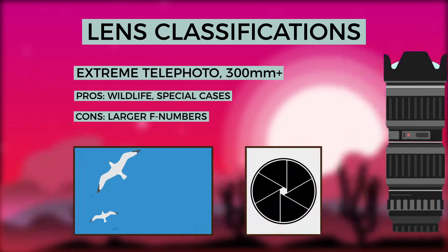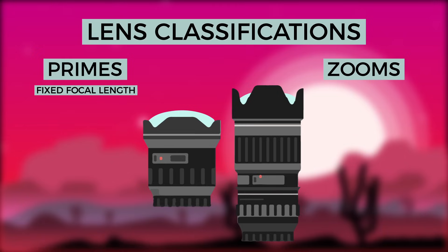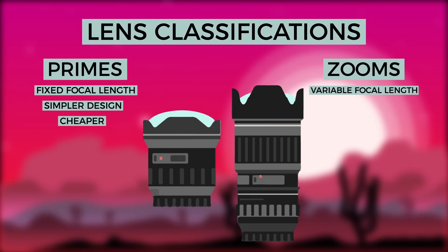Within these categories lie prime and zoom lenses. Prime lenses are lenses that have a fixed focal length. They are often simpler lenses, making them easier to manufacture, and in return cost less, and usually are of higher quality than zoom lenses. Zoom lenses, on the other hand, cover a range of focal lengths, and because of their versatility, allow you to carry one lens instead of two or three to cover the same focal range.